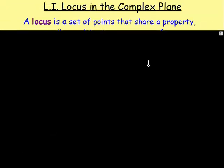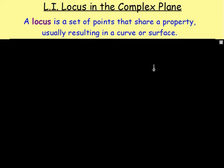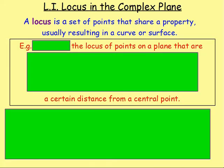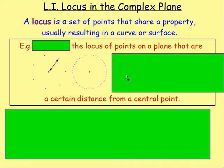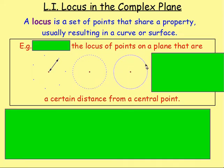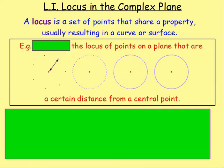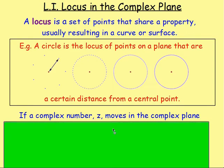A locus is a set of points that share a property, which usually results in a curve or a surface. For example, if you take some points that are the same distance from a central point — all these points are the exact same distance from that point. If we kept adding more, what we end up with is a circle. So we can say a circle is the locus of points in a plane that are the same distance — a certain distance — from a central point.